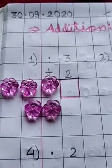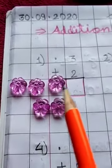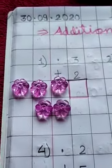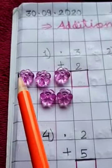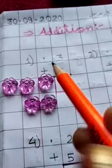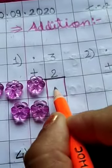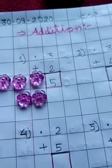So let us add them. For adding them I am using this flower beads. So let's start. 3 plus 2. So let's count. 1, 2, 3, 4, 5. So your total is 5. So write 5 here.